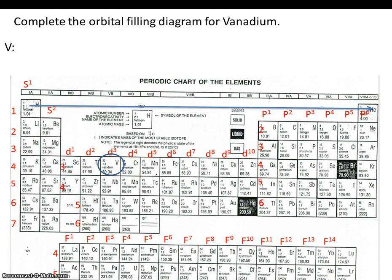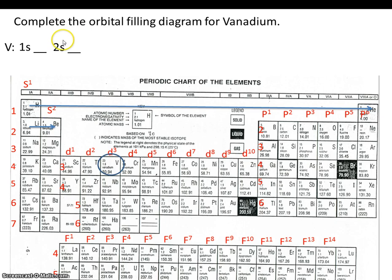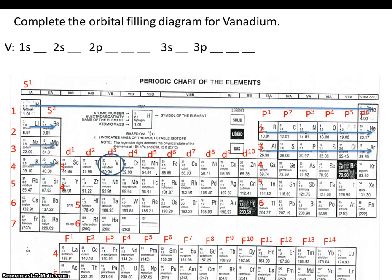So 1s — this is energy level 1, sublevel S, and sublevel S has one orbital. We have 2s, this is energy level 2. In energy level 2, there's one sublevel, it's S, and it has one orbital. Now 2p — 2p has three orbitals — then 3s, 3p, 4s, and 3d.